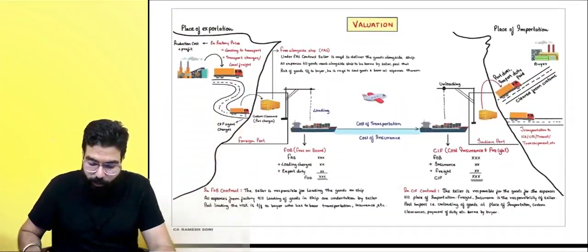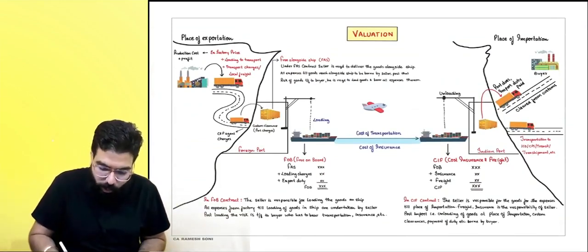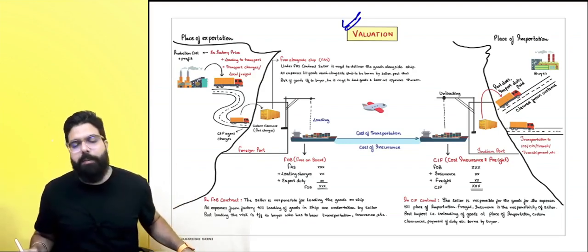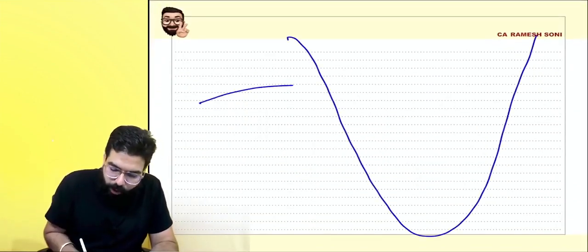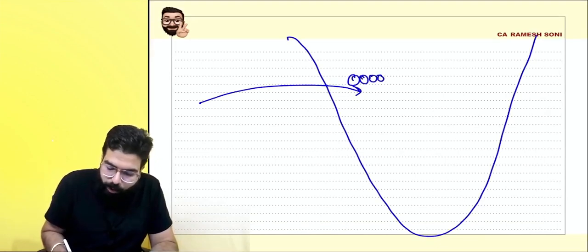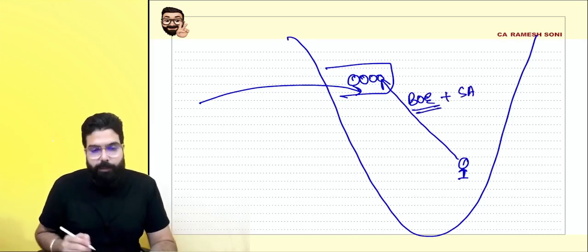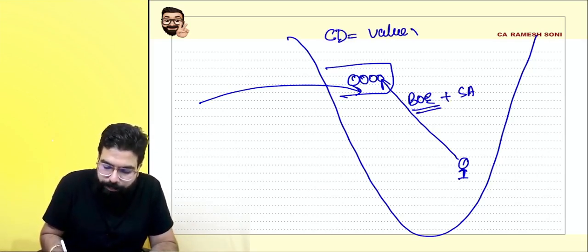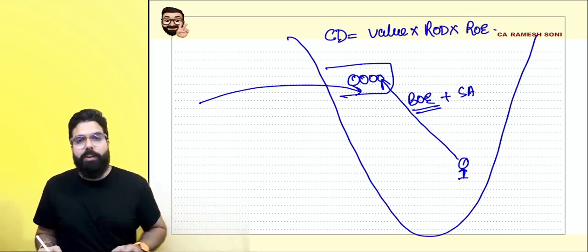The next chapter we are going to start is valuation under customs. Let's do a revision. When you import goods, you file a bill of entry, do self-assessment, and calculate custom duty. Custom duty equals value multiplied by rate of duty multiplied by rate of exchange.